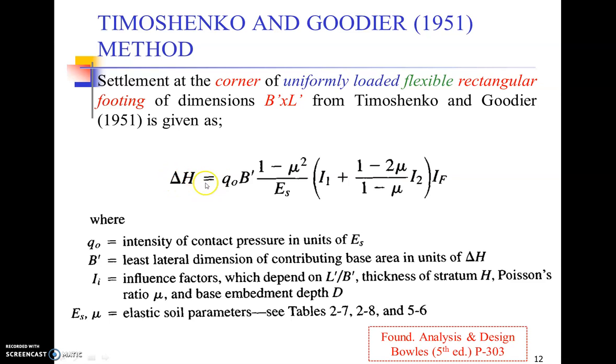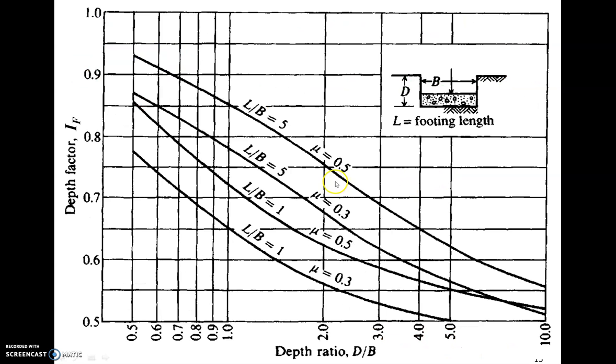With a quick preview of what we have discussed: the settlement in a compressible sand layer can be determined using the average pressure at the base of the foundation, half the width of the foundation, and the elastic properties such as the Poisson's ratio and the elastic modulus. Then there are some geometrical factors such as I1, I2, and If which we determine through this graph.